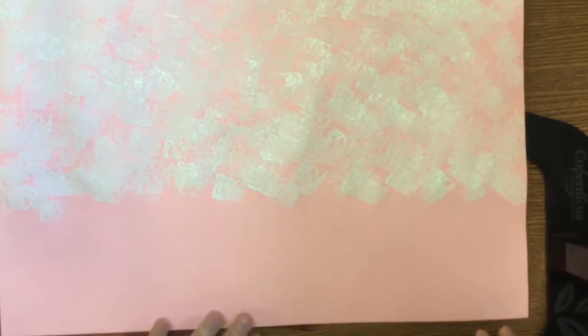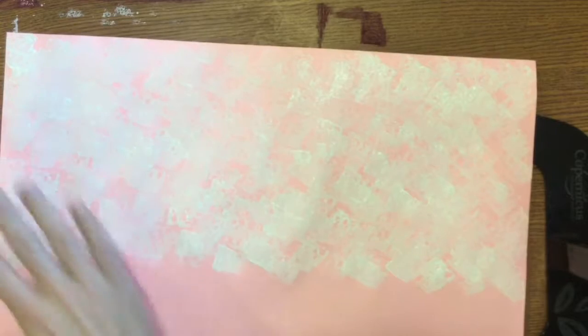All right, so I've finished printing my background. Notice I didn't have to do the very bottom part. Like I said, that's going to get covered up by waves. I printed white all over it.